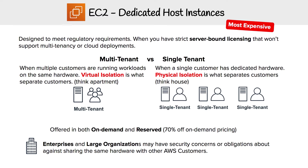To compare these two: multi-tenant is like everyone living in an apartment, and single-tenant is everyone living in a house. Why would we want our own dedicated hardware? Large enterprises and organizations may have security concerns or obligations about sharing the same hardware with other AWS customers — it really just boils down to that.